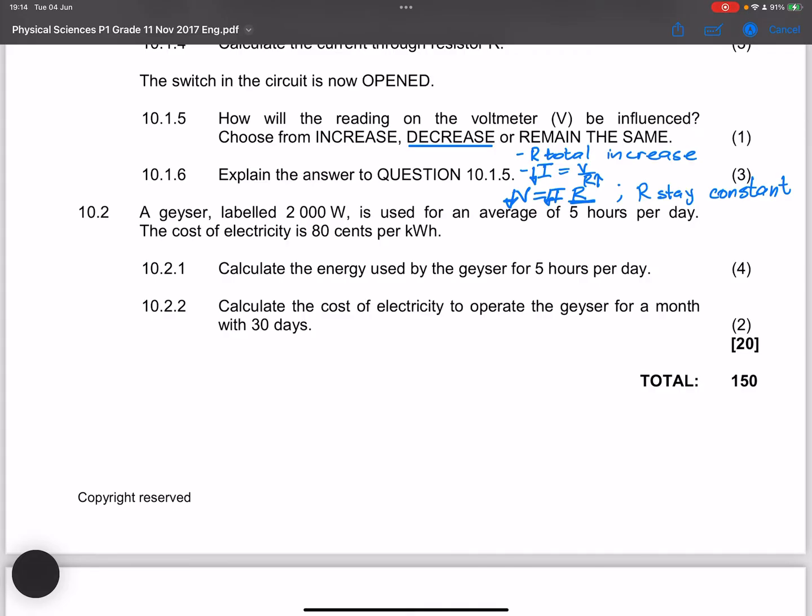Right, and finally, they say a geyser labeled 2,000 watts is used for an average of five hours. Okay, they say the cost of electricity is 80 cents per kilowatt hour. So that's our rate. So the rate at which we pay for electricity is 80 cents. So that's going to be 0.8 of a rand per kilowatt hour. Now, they say to us, calculate the energy used by the geyser for five hours per day.